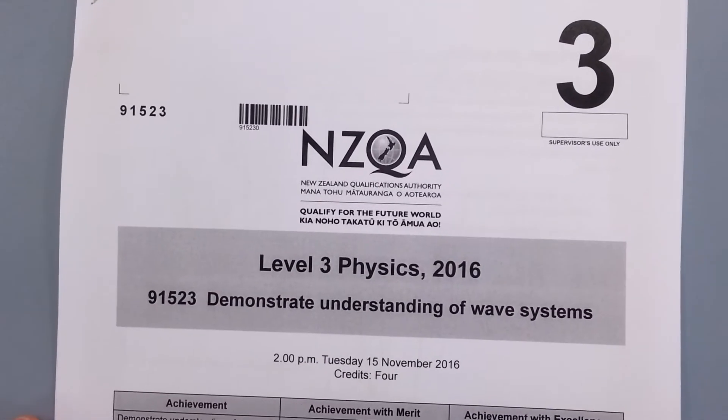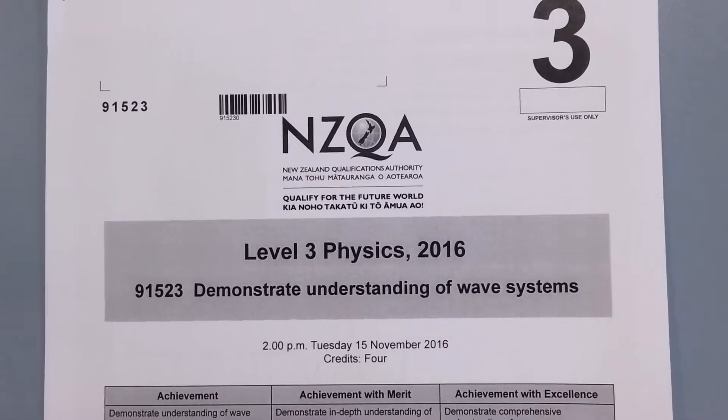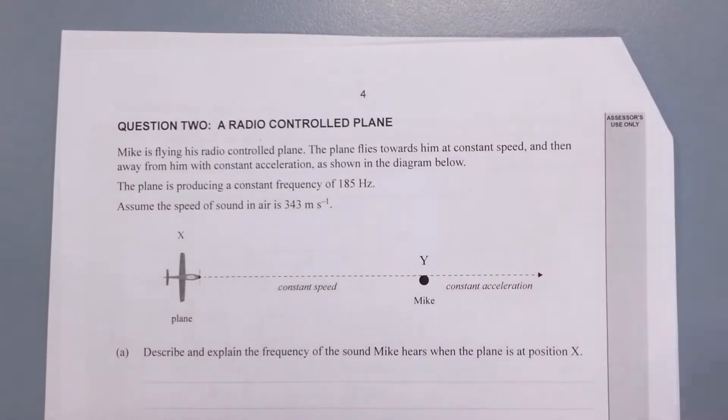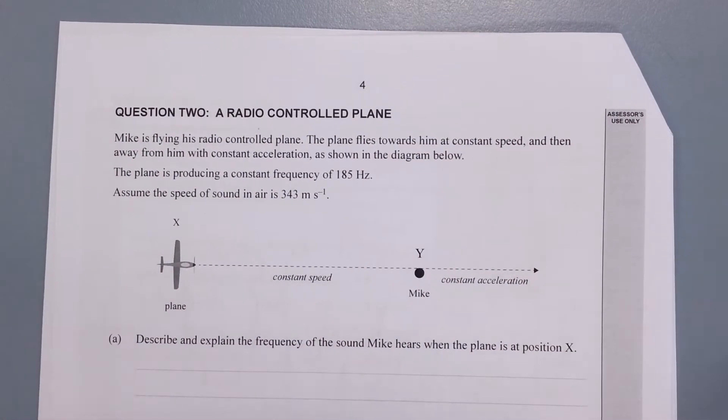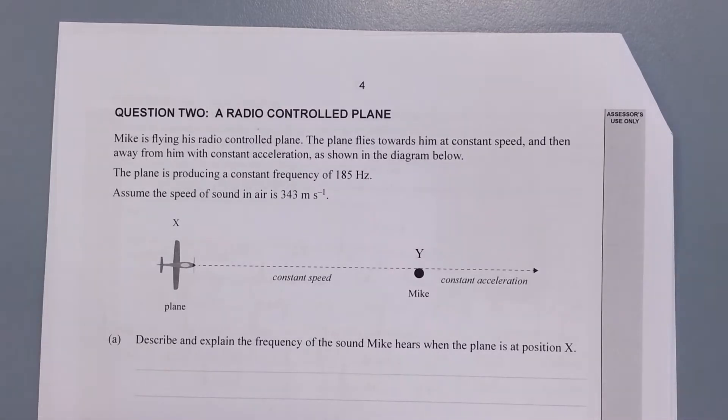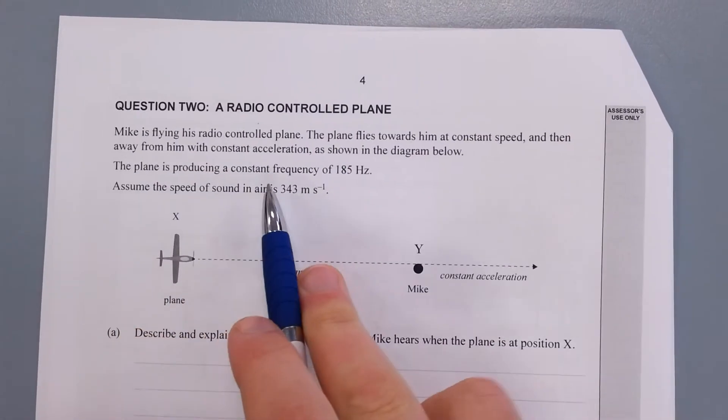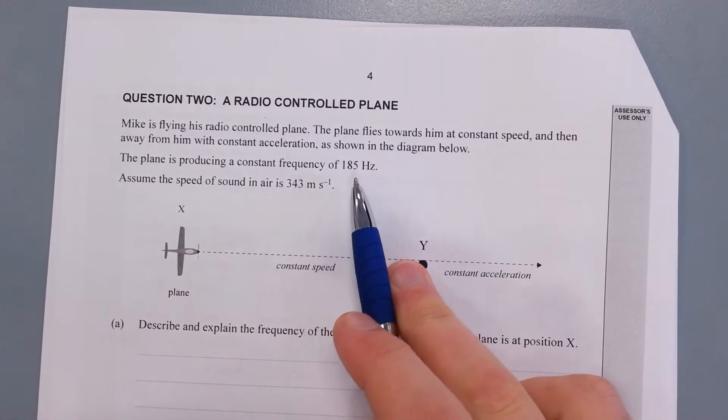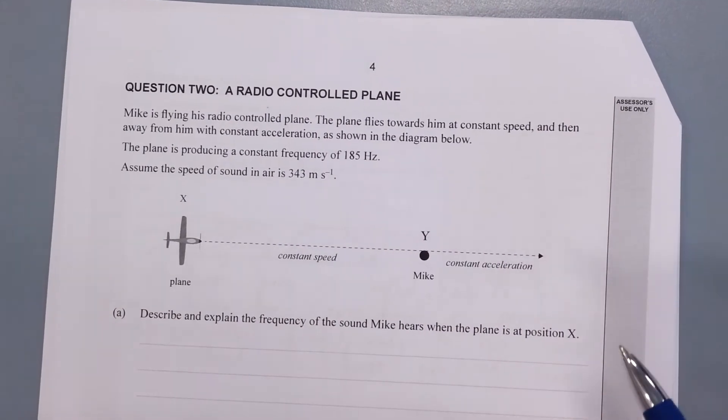For this video I'll be working through question 2 of the Level 3 2016 WAVES exam. Question 2, radio control plane. Mike is flying his radio control plane. The plane flies towards him at a constant speed and then away from him. The constant acceleration is shown in the diagram below. The plane is producing constant frequency 185 Hz. Speed of sound is 343 m per second in air.